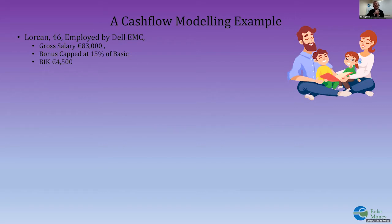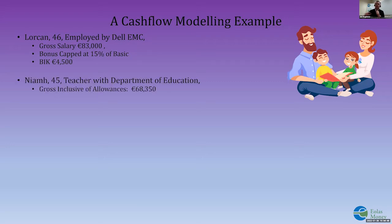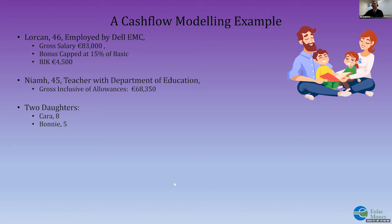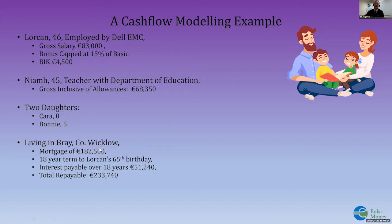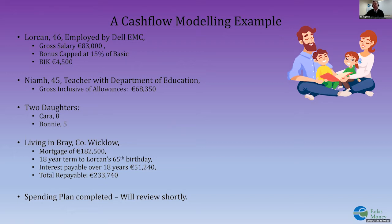We're going to look at Lorcan, who works with Dell EMC. His gross salary is €83,000 and he has a bonus capped at 15% of basic. Dell pay his health insurance for himself and Niamh. He's 46; Niamh is 45 and she's a teacher with the Department of Education, with a gross salary inclusive of all allowances of €68,350. They have two daughters, Cara and Bonnie, aged eight and five. They live in Bray, County Wicklow. Their mortgage is €182,500 with 18 years left, taking them to Lorcan's 65th birthday. They will pay €51,240 of interest over that time, making total repayable €233,740.